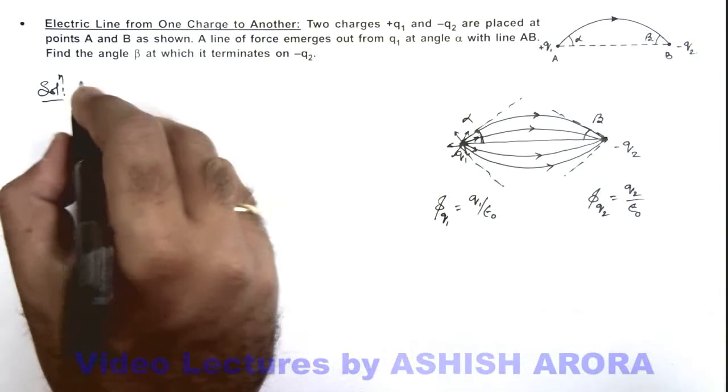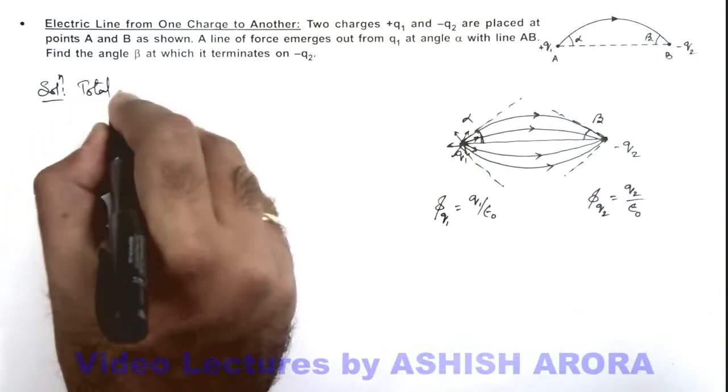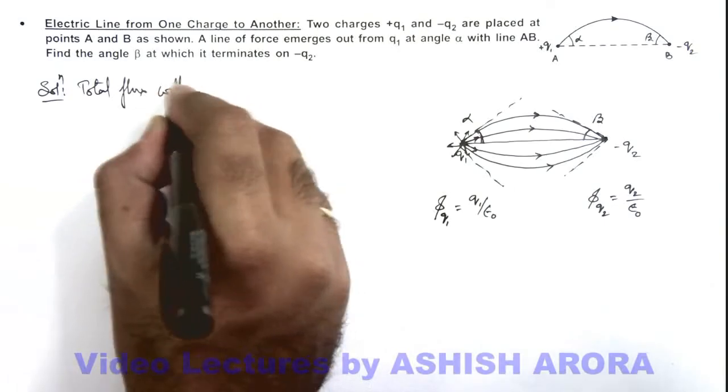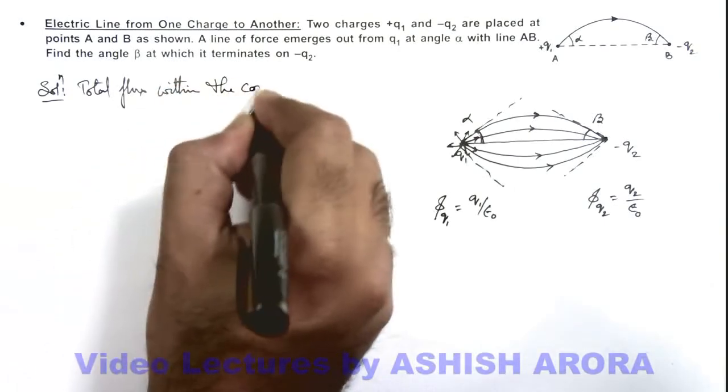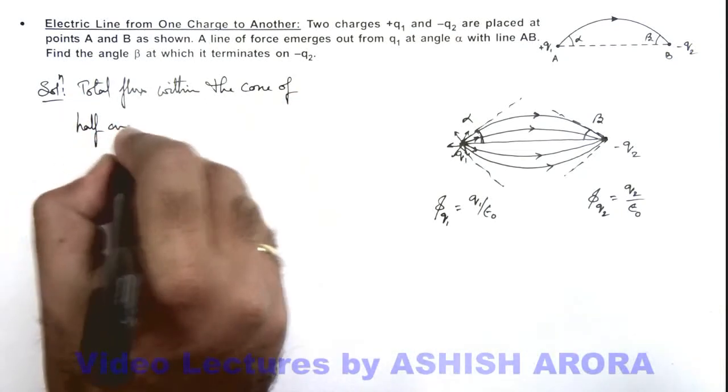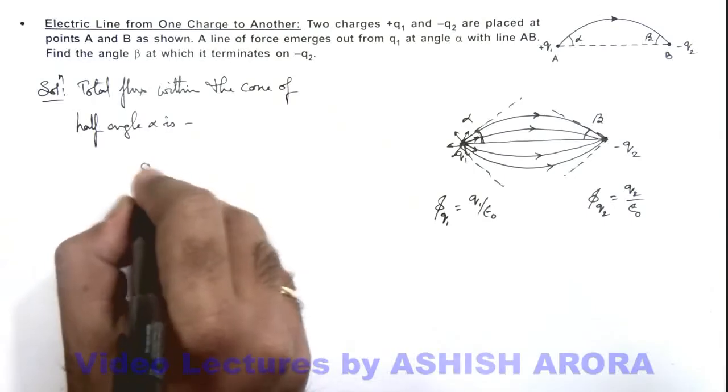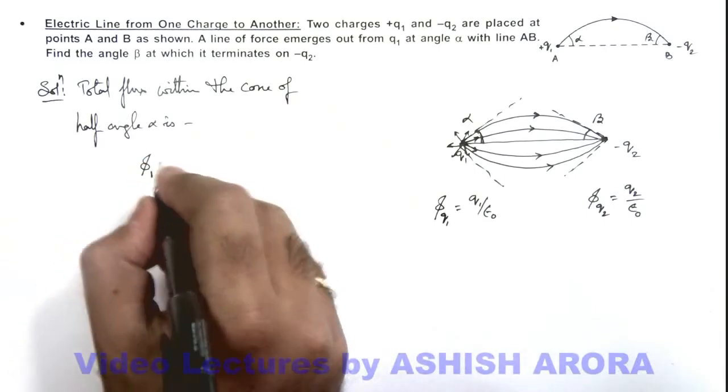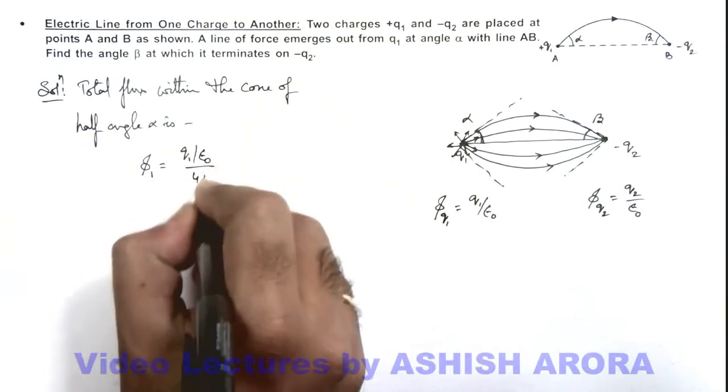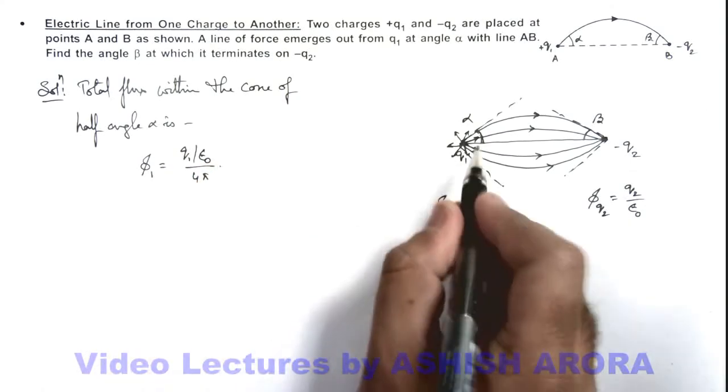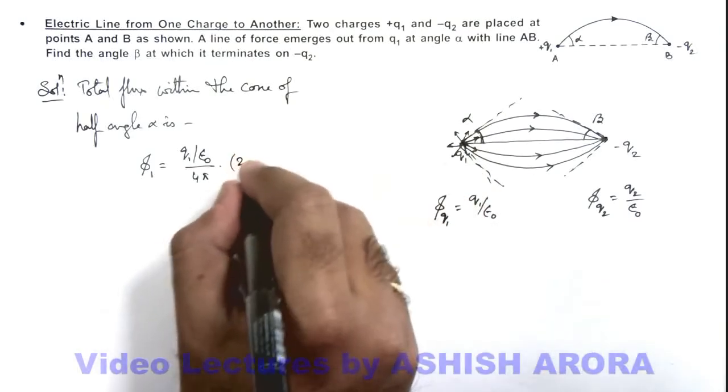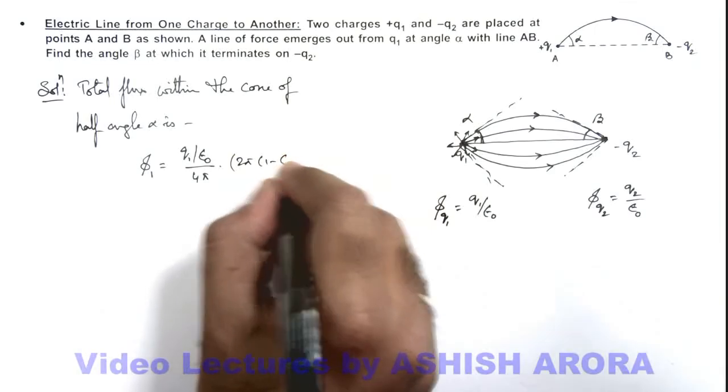So here we can write total flux within the cone of half angle alpha as phi 1, and the value will be q1 by epsilon not by 4 pi multiplied by the solid angle subtended at the vertex of this cone, so that is 2 pi (1 minus cos alpha).